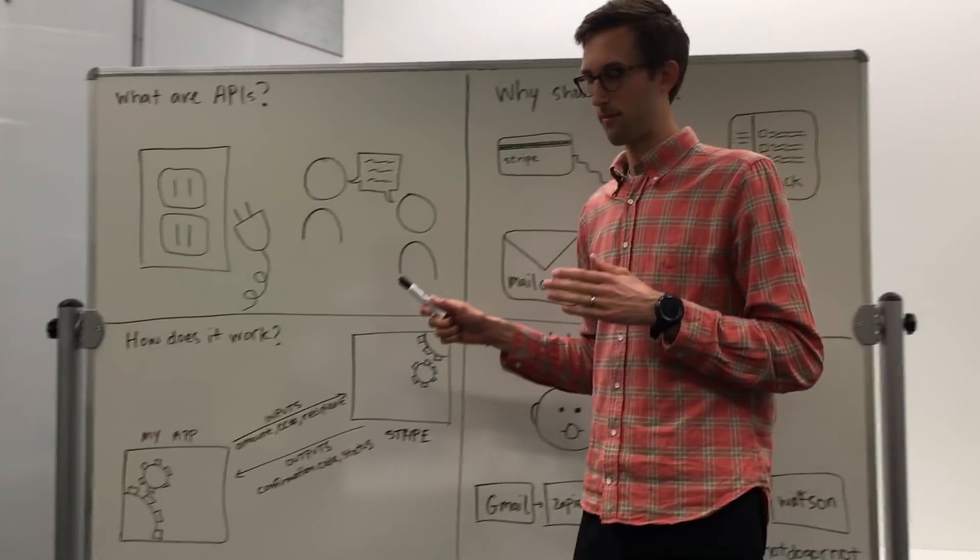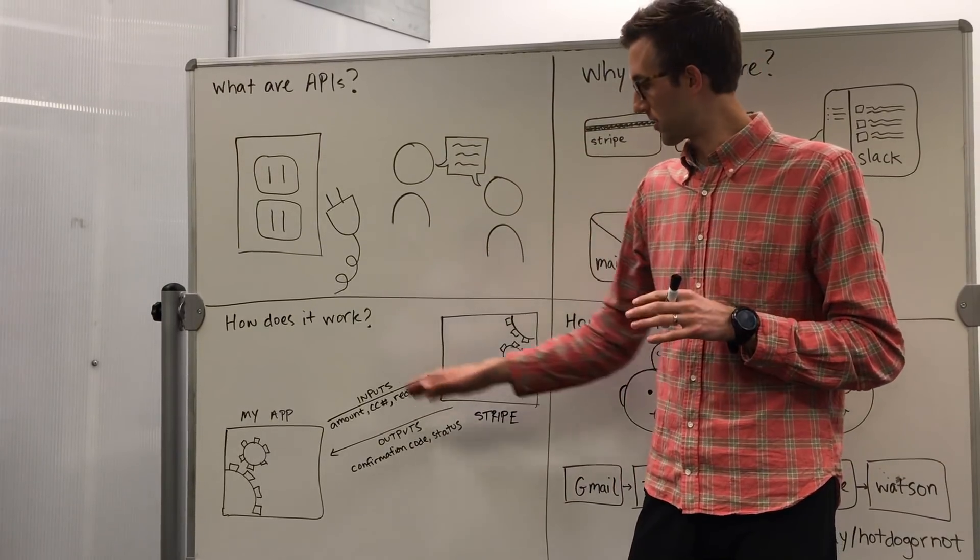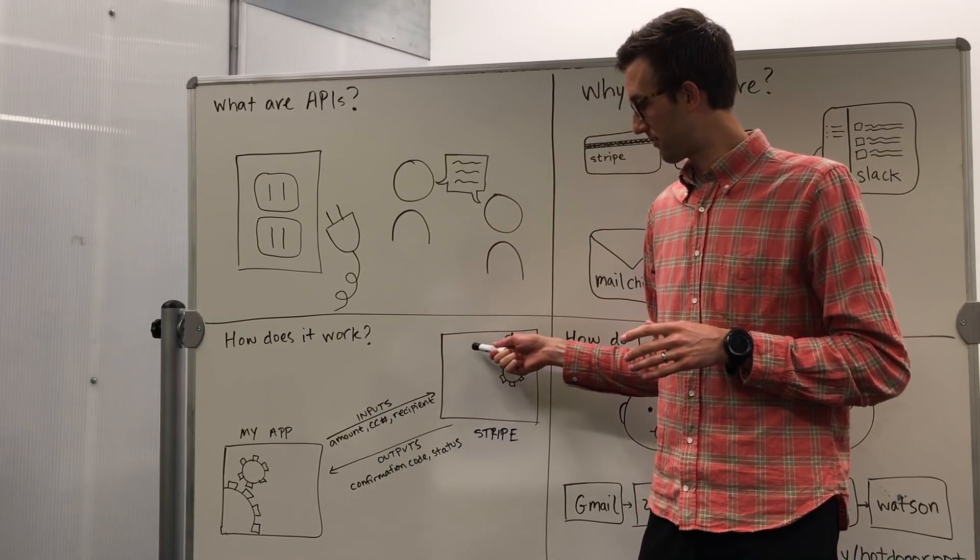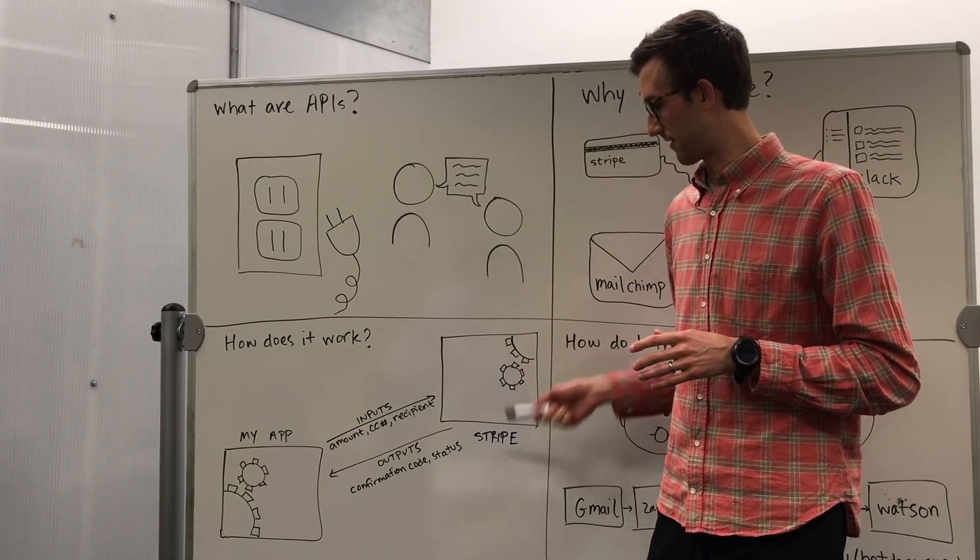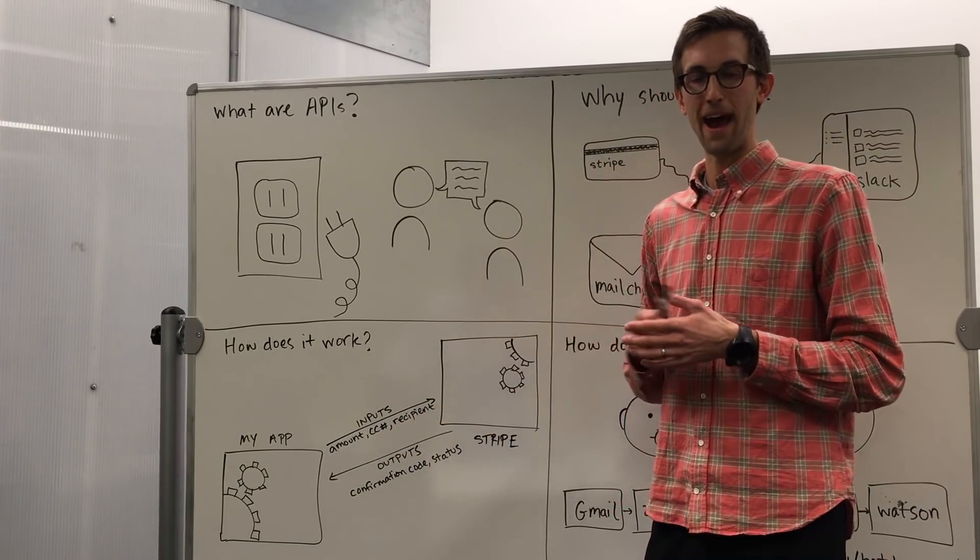So how does it work in a nutshell? An API or the interface is all about a certain language. So there's an agreed-upon set of code language where you can send inputs to this third-party service, in this case it's Stripe for payments. And then you can get outputs or responses back from the API.